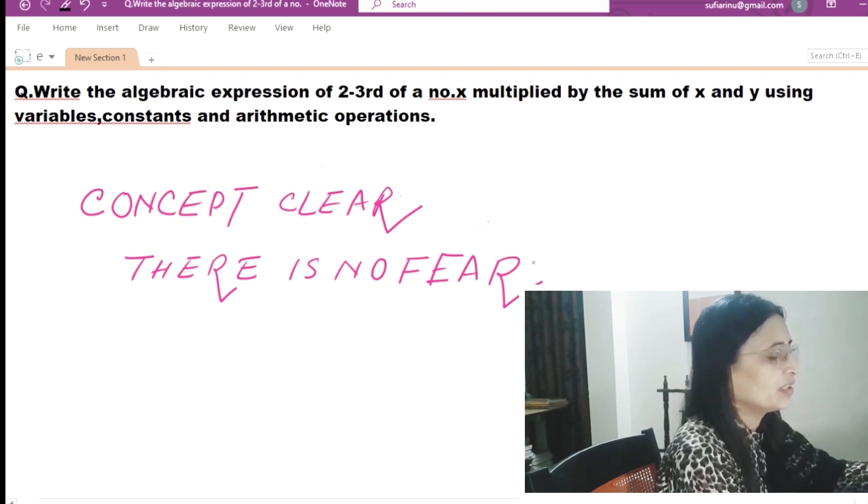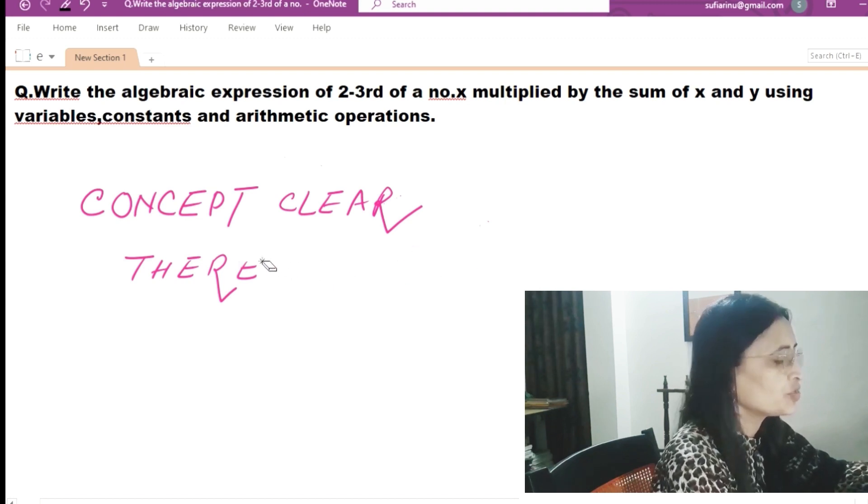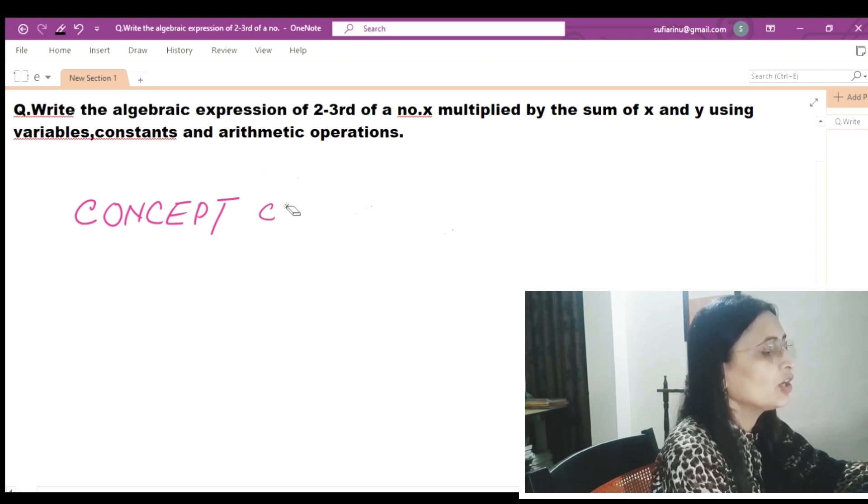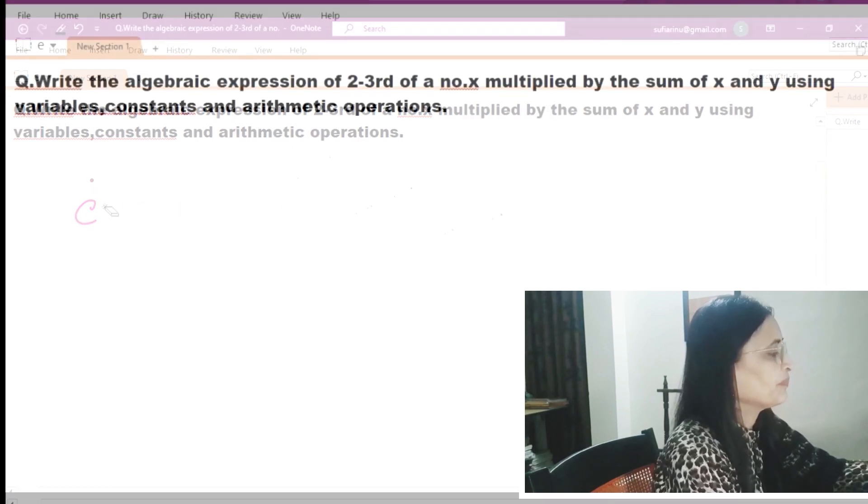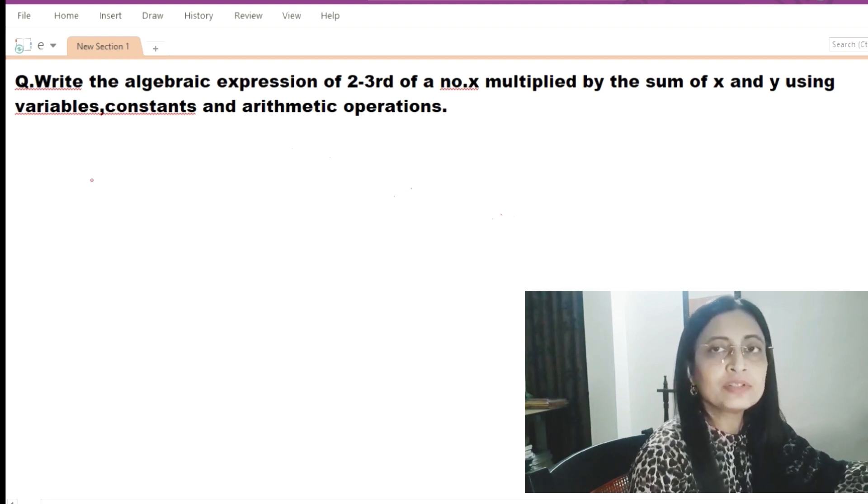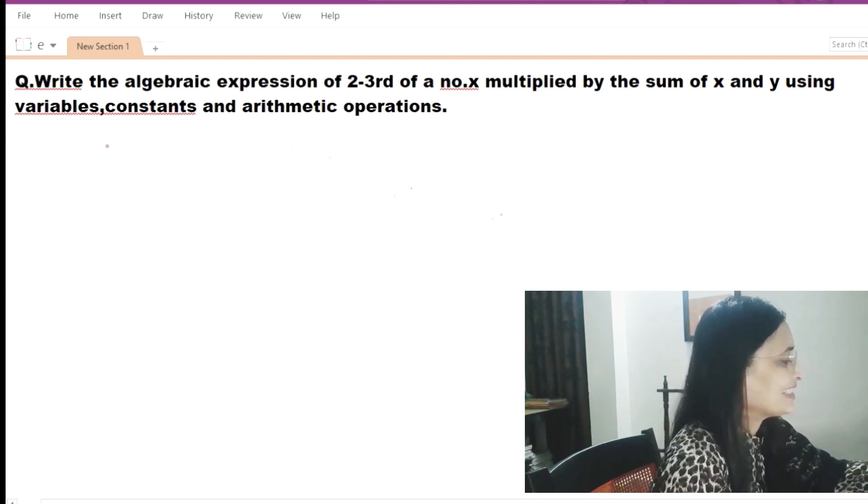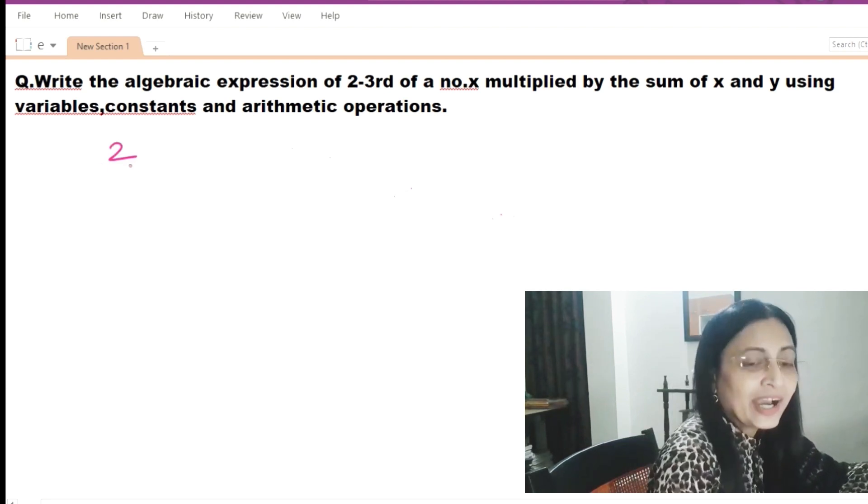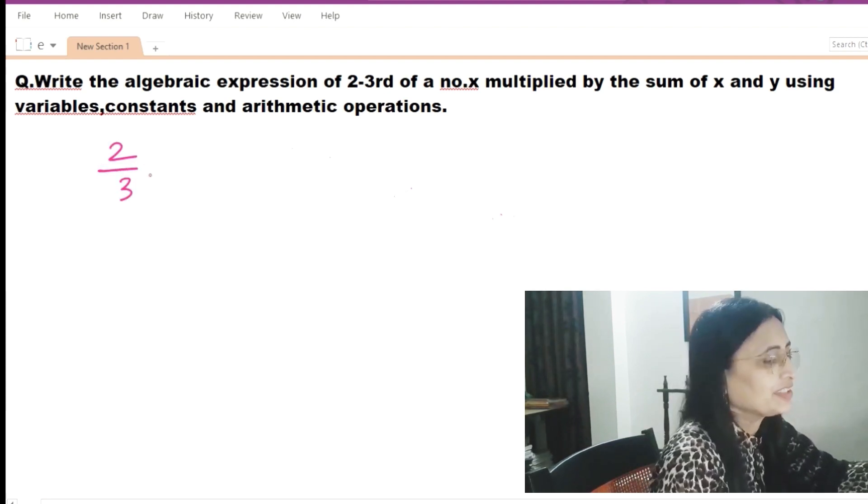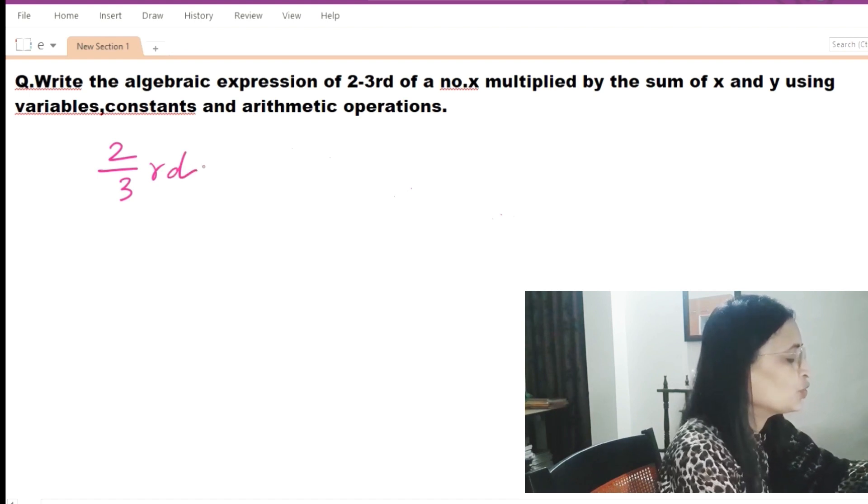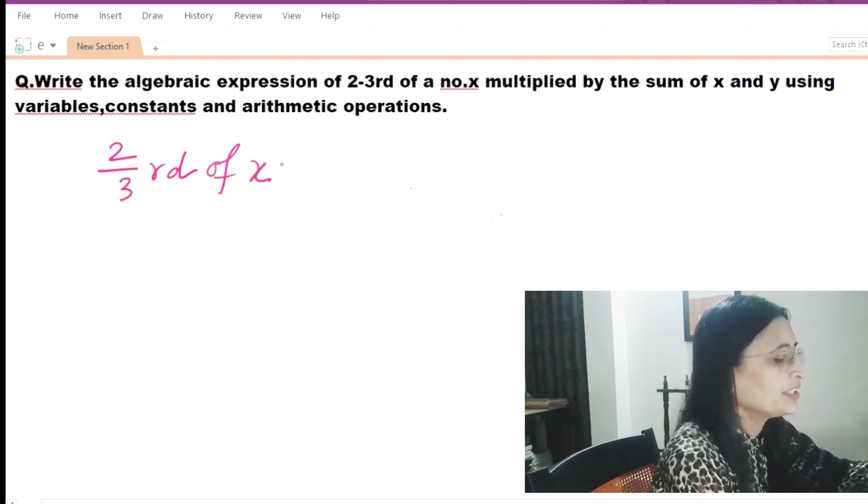Question number one: Write the algebraic expression of two-third of a number x multiplied by the sum of x and y using variables, constants and arithmetic operations. Now children, try to remember the terms variables, constants, arithmetic operations. We have found it in the definition of algebraic expression, right? Two-third of x means two by three into x. That means product of two by three and x.